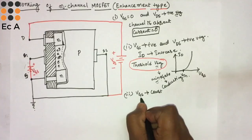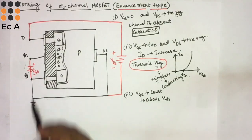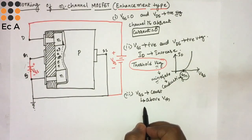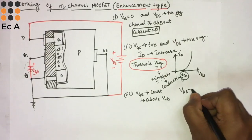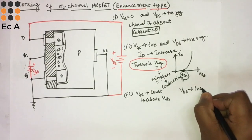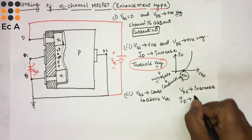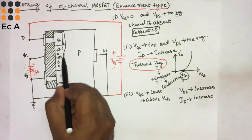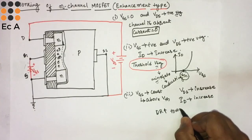Now VGS is fixed above the threshold voltage so that the MOSFET is conducting. As we keep on increasing VDS, the drain current also increases. The depletion region present between the N channel and P substrate will also increase towards the drain.